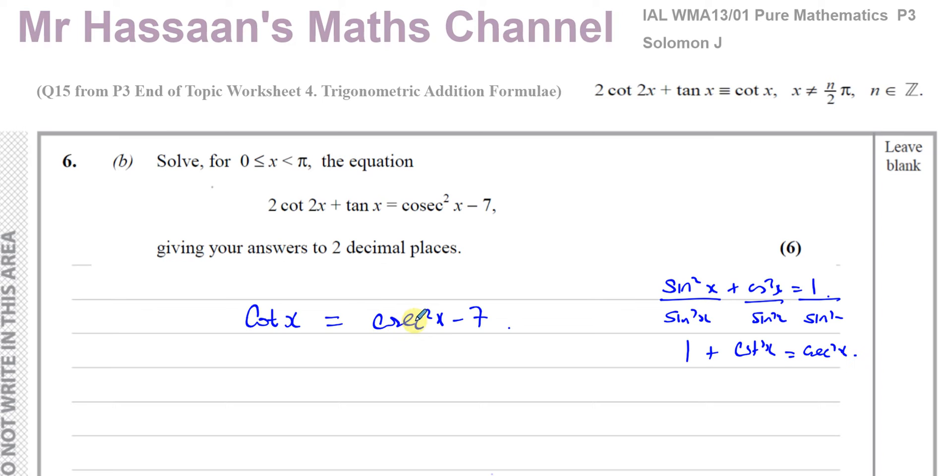So if I replace the cosec squared x with 1 plus cot squared x, I'll have an equation with all the same trig ratio. It's always the case where the one that's squared changes into one that's not squared. So I'm not going to try and change cot x into cosec squared x because then I'll have to use square root. But cosec squared x, I can change into 1 plus cot squared x, and that's going to make life easier. So I'm going to have cot x equals 1 plus cot squared x minus 7.